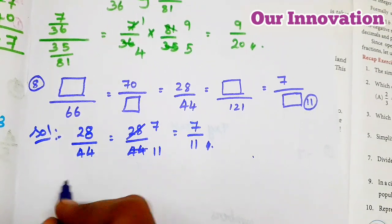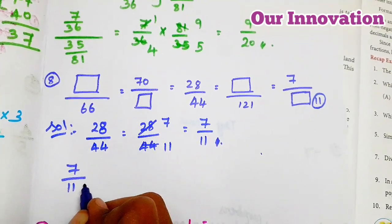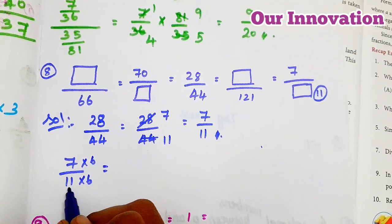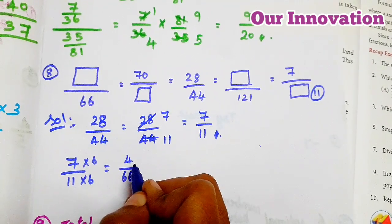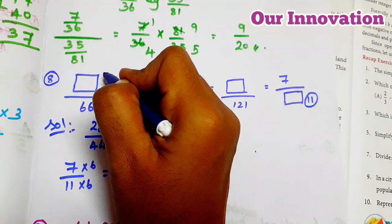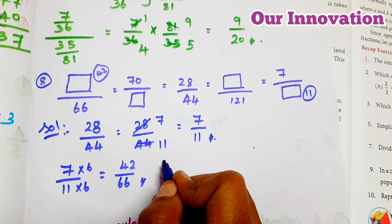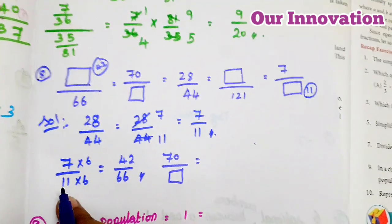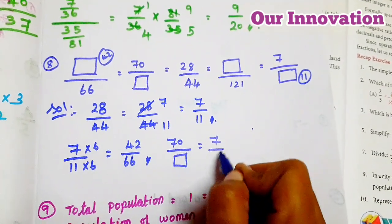Here is 66. So 7/11 — here is 11. The fraction is 6/66. In the fraction, 70 by box. In the smallest fraction, we have to write 7/11. So simply: 7/11.